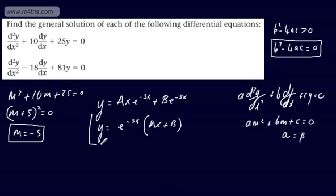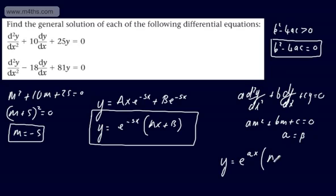In general, the general solution when α = β is y = e^(αx)(ax + b).